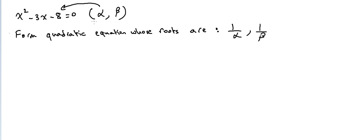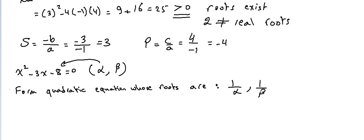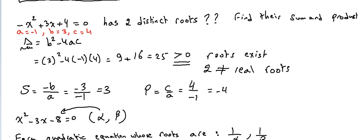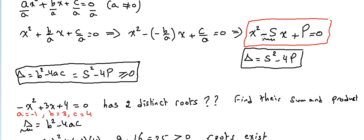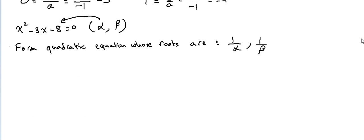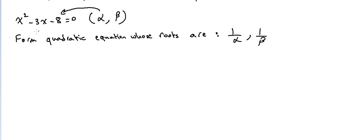To form that new equation, remember that every quadratic equation can be written in the form x²−sx+p=0. In order to differentiate between the original equation and the new one, I'll write the new quadratic equation in terms of y instead of x — we can always change it back.